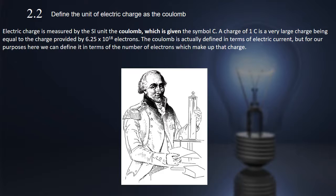What I would like you to do is highlight 6.25 times 10 to the 18 electrons and that the SI unit is coulomb. This is key for the mathematical worksheets on electric charge and for the following dot points on 2.3 and 2.4.